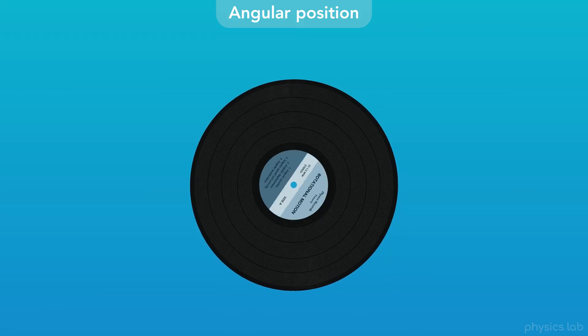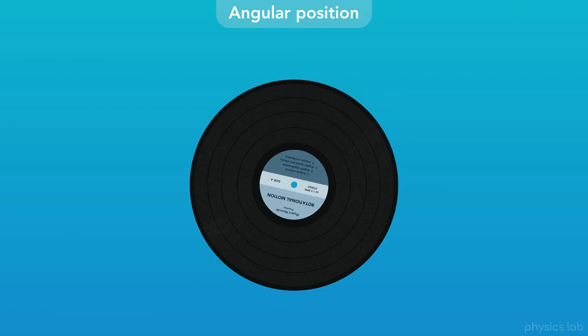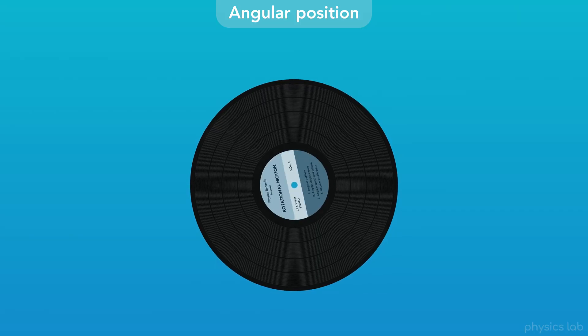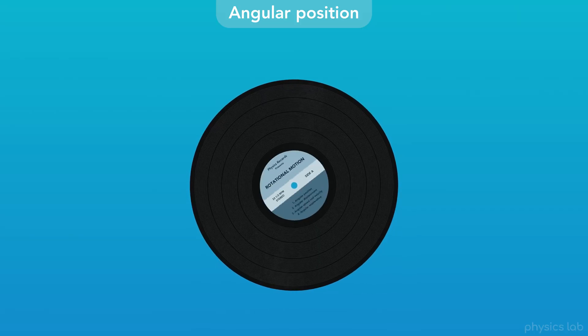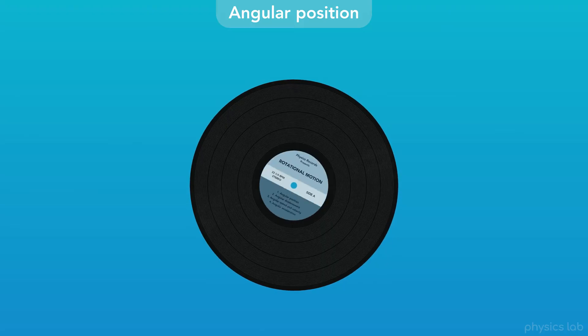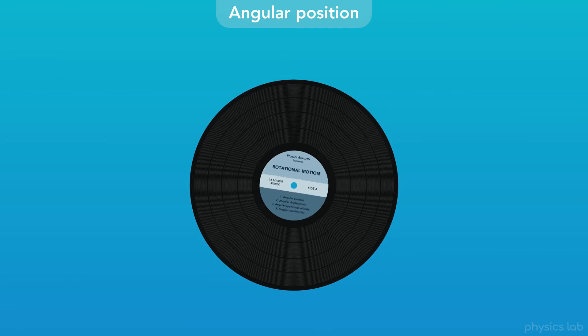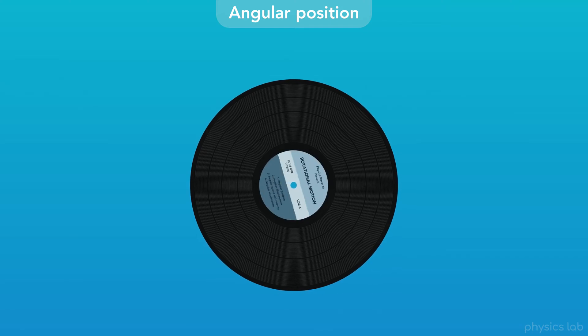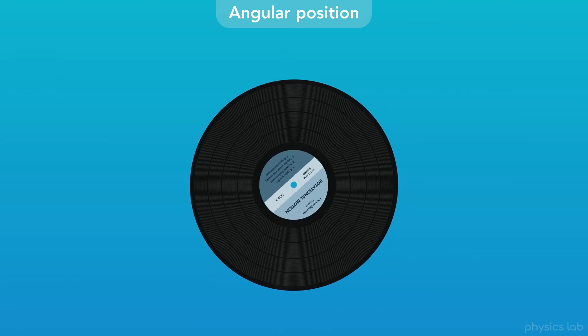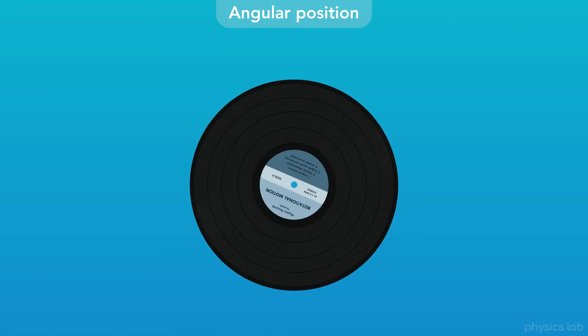But we can see the record is moving somehow, so we're still going to use the term position in order to describe what about the object is changing over time. It might make more sense to say we're describing how the orientation of the record is changing, but we'll find that using the term position is useful, because it ties into the rest of kinematics and the way we describe motion.